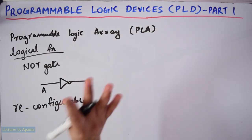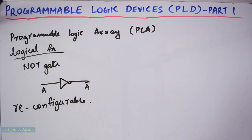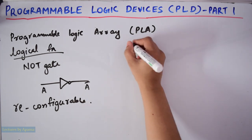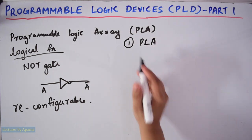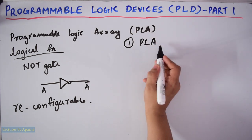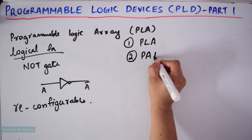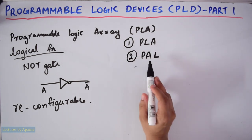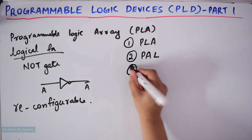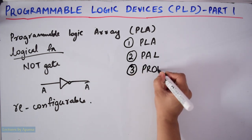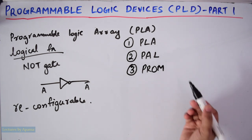So there are three fundamental types of programmable logic devices. First one is PLA or Programmable Logic Array. Second one is PAL or Programmable Array Logic. Third one is PROM, that is Programmable Read Only Memory.